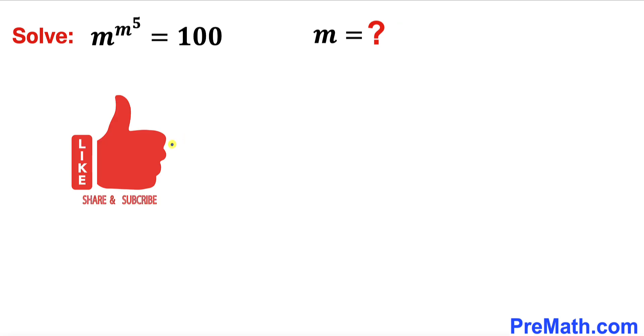Please don't forget to give a thumbs up and subscribe. Let's go ahead and get started with the solution. Here's our very first step. Let's focus on this 100 on the right-hand side. This could be written as 10 to the power of 2. So therefore this equation could be written as m to the power of m to the power of 5 equals 10 to the power of 2.